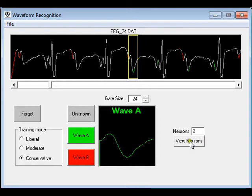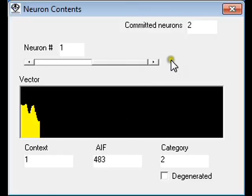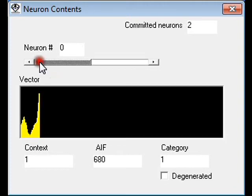We can also view the content of the neurons. In this panel, we can see the two committed neurons. Neuron number 1 here shows a waveform of type B, which is assigned to a category 2 inside the CM1K chip. The first neuron, with index 0, is assigned to a waveform type A, which is a category 1 in the CM1K chip.